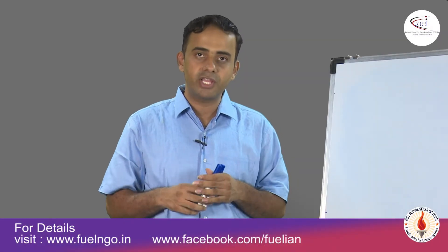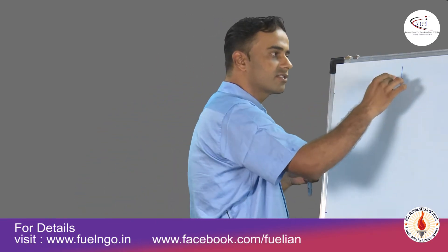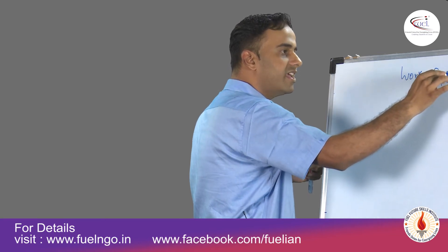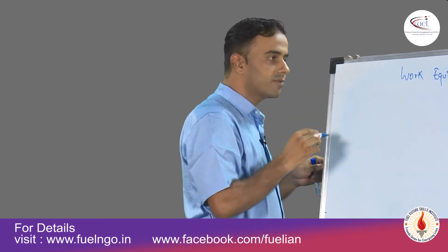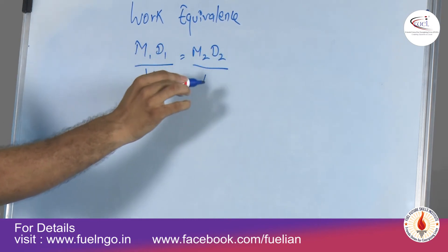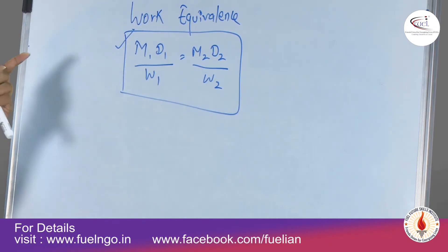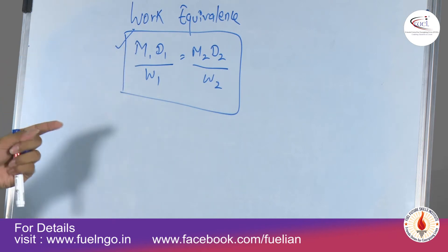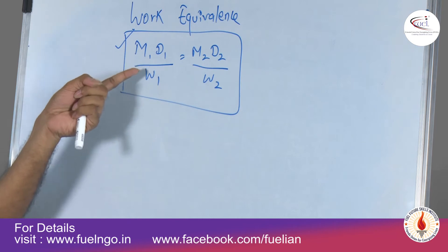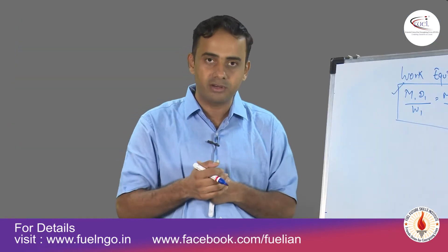The next example talks about the concept of work equivalence. Work equivalence in the case of time and work states that M1D1/W1 is equal to M2D2/W2 — men, days, and work are equated with men, days, and work. You can introduce any number of variables, and in most cases you can also use the application of percentages to make it a quick-step question.